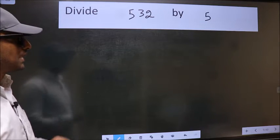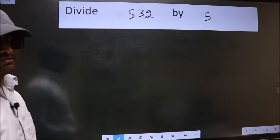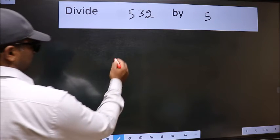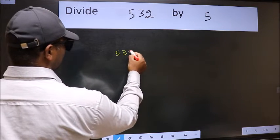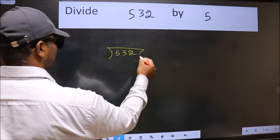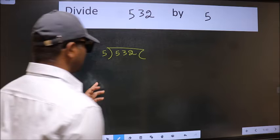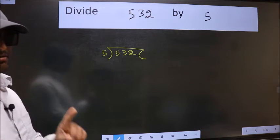Divide 532 by 5. To do this division, we should frame it in this way: 532 here and 5 here. This is your step 1.